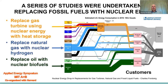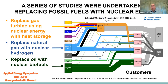We have conducted a series of studies to understand how to replace fossil fuels with nuclear energy, summarized in the following figure. We show the energy flows in the United States with energy sources on the left and energy consumers on the right — the residential, commercial, industrial, and transport sectors. We would like to discuss replacing three parts of that energy diagram with nuclear energy.